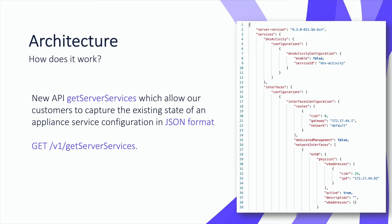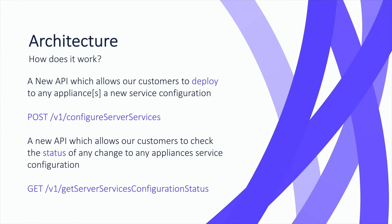The first REST API we've added is the Get Server Services call. This API allows customers to get the currently deployed service descriptor from an existing appliance under BAM control. This API is called against individual appliances using the object ID, and it returns the current JSON service descriptor from the appliance.